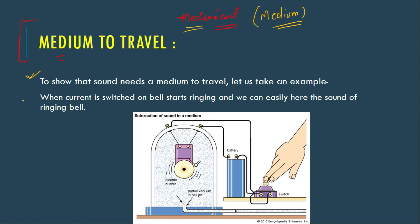When the current is switched on, the bell starts ringing and we can easily hear the sound of a ringing bell. In this mechanism, you can see the bell ringing. There is a chamber — this is called a bell jar.